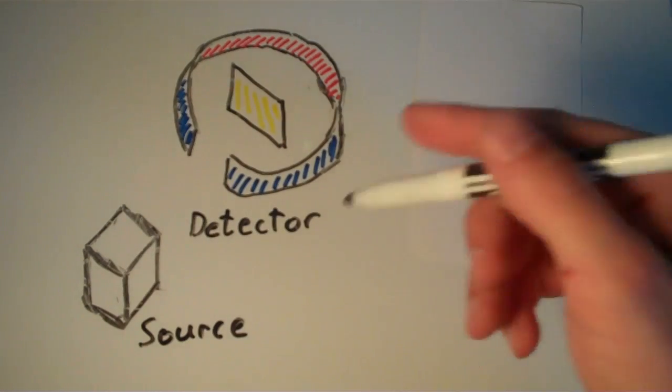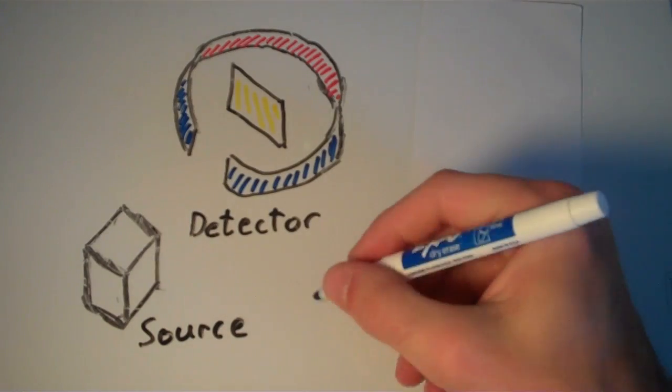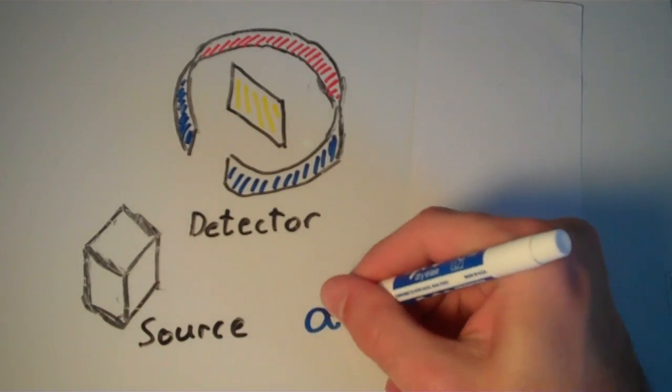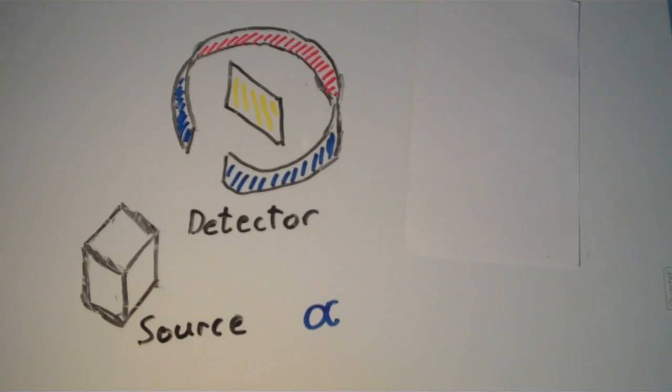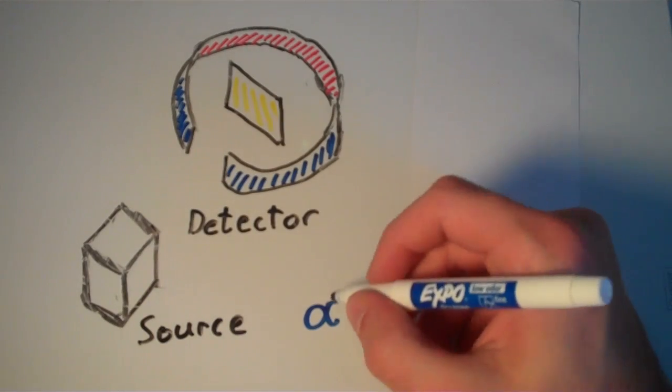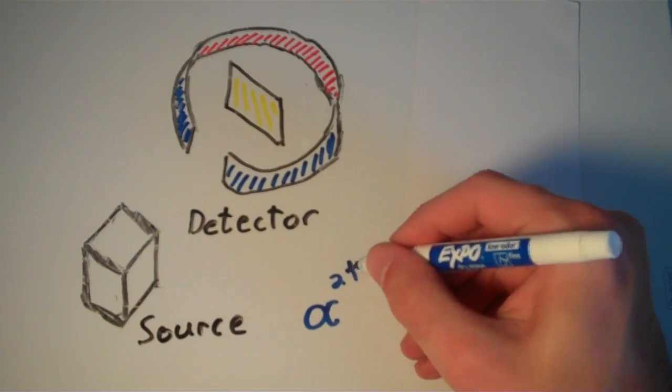Now what this source does is it pumps out what we call alpha particles. So alpha particles, which are these relatively heavy, positively charged particles. They're also written as alpha 2 plus because they carry a positive 2 plus charge.